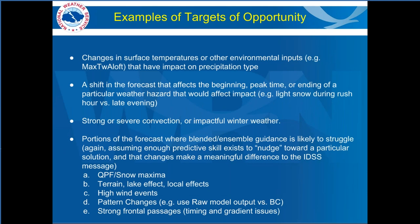Here are some examples that would qualify as targets of opportunity. Changes in surface temperature or environmental inputs that would impact precipitation type — such as max wet-bulb temperature aloft or probability of ice presence. A shift in the forecast affecting the beginning, peak, or ending time of a weather hazard — for example, light snow now beginning at 4 PM instead of 7 PM, thus affecting the drive home from work and school. Strong or severe convection always qualifies, as would any impactful winter weather.